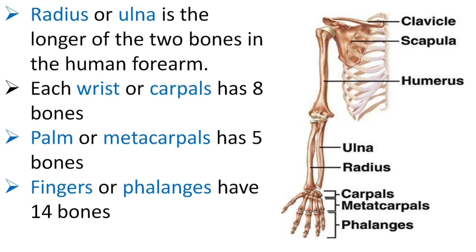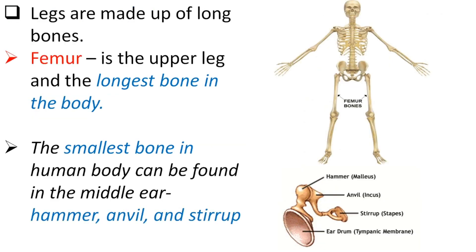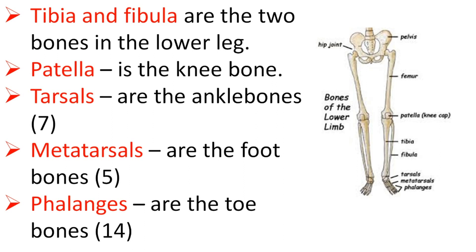The radius or ulna is the longer of the two bones in the human forearm. Each wrist, or carpals, has eight bones. The palm, or metacarpals, has five bones. The fingers, or phalanges, have 14 bones. Legs are made up of long bones. The femur is the upper leg and the longest bone in the body. The smallest bones in the human body are found in the middle ear — the hammer, the anvil, and the stirrup. The tibia and fibula are the two bones in the lower leg. The patella is the knee bone. The tarsals are the ankle bones, composed of seven bones. The metatarsals are the foot bones, consisting of five bones. The phalanges of the toes consist of 14 bones.